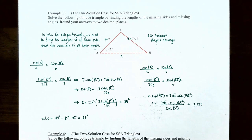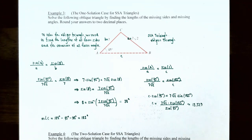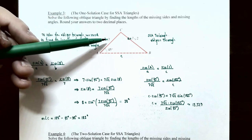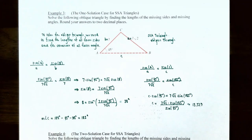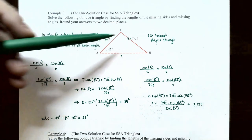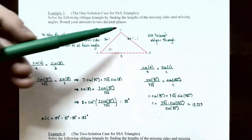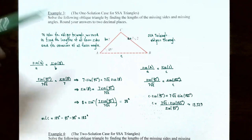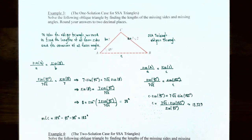Example three is the one-solution case for an SSA triangle. Solve the following oblique triangle by finding the lengths of the missing sides and missing angles, rounding answers to two decimal places. We are given angle A = 45°, side B = 7, and side A = 7√2. Make sure your triangle is labeled so that side A is across from angle A, side B is across from angle B, and side C is across from angle C. This is an SSA triangle — two sides and one angle — making it an oblique triangle with no right angle.